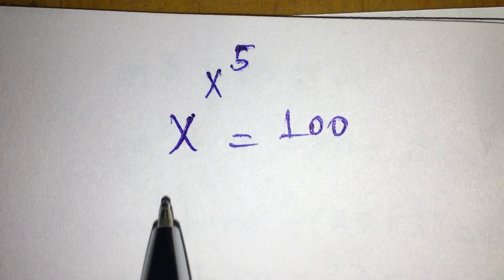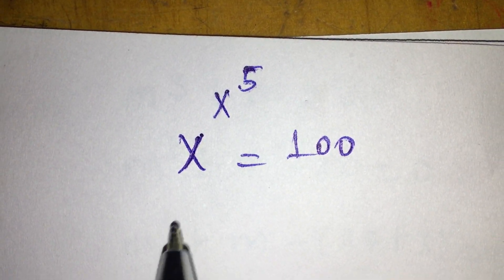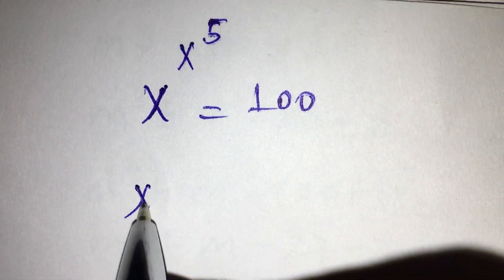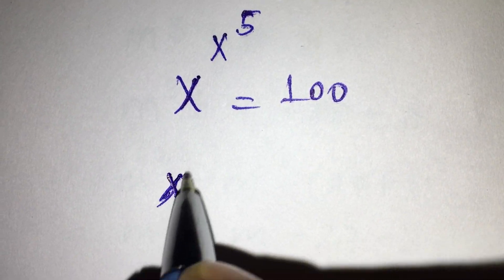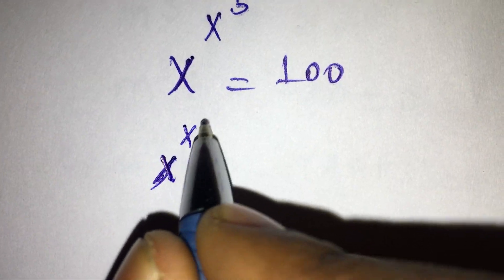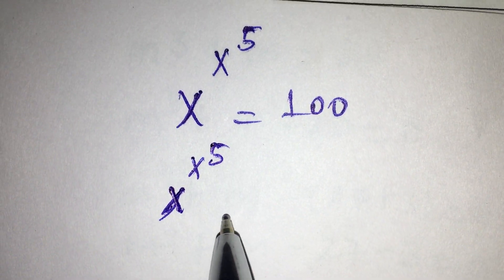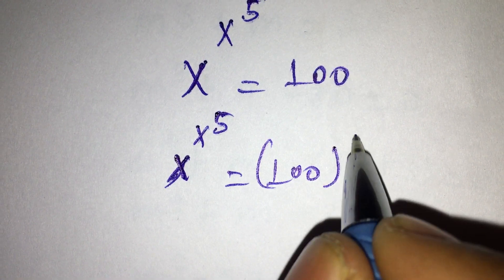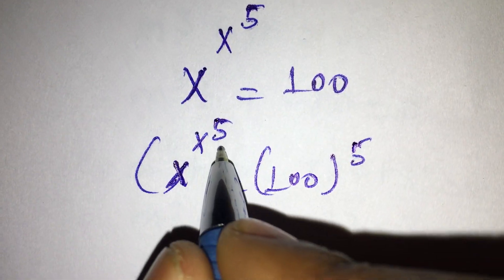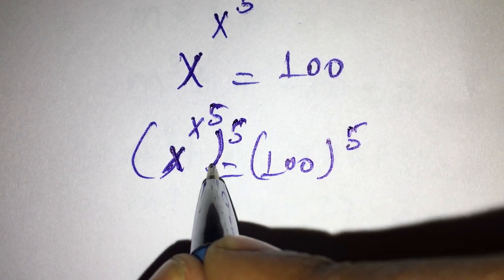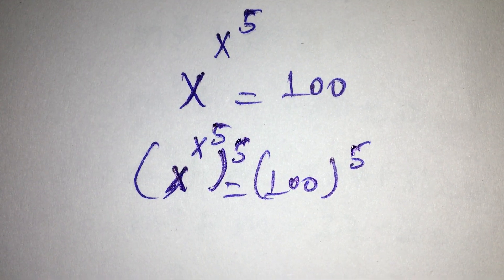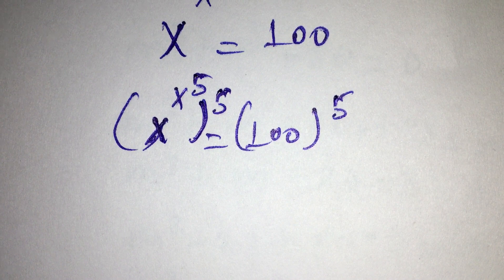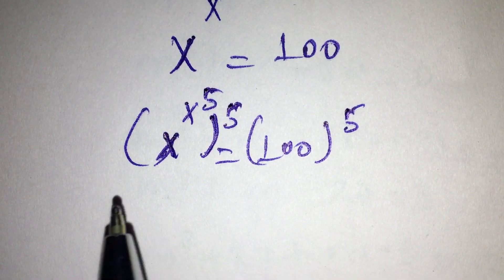First, we multiply both sides by 5. x to the power of 5, equal to 100, the whole 5. We multiply both sides by 5.